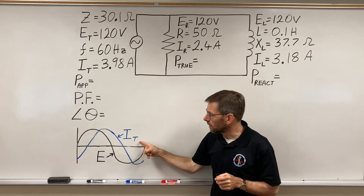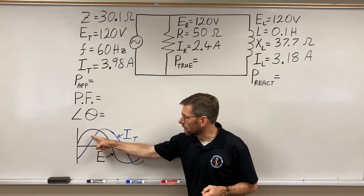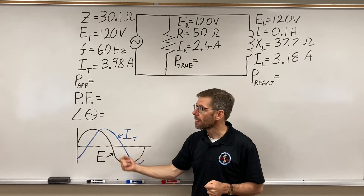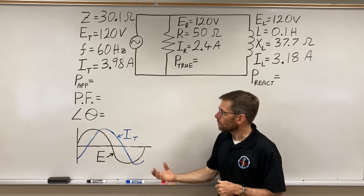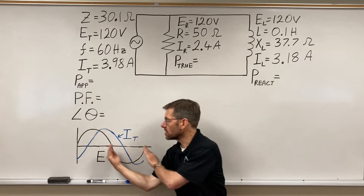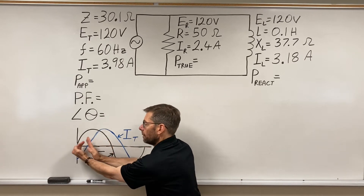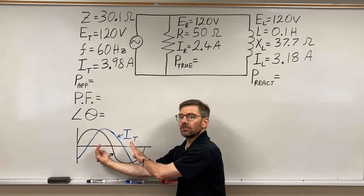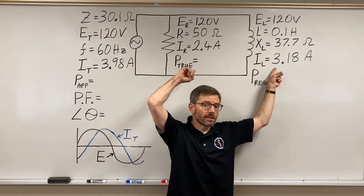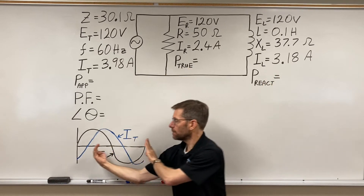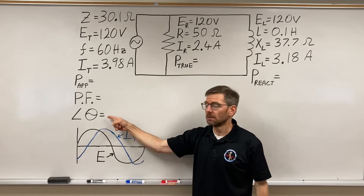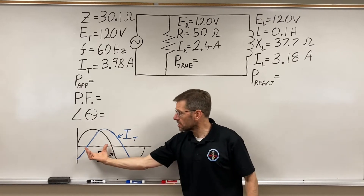Last time we had the resistive current in phase with the voltage and the inductive current 90 degrees out of phase. What I took was the sum of the two, and it is neither in phase with the voltage nor out of phase by 90 degrees — it's somewhere in the middle. The resistive current tried to pull it back in phase; the inductive current tried to pull it out to 90. Because there's a little more inductive current than resistive current, it's pulled a little more out of phase.